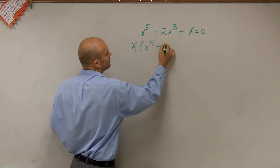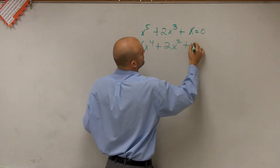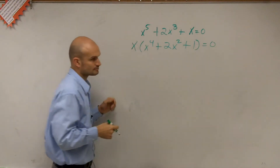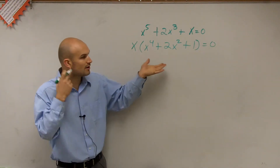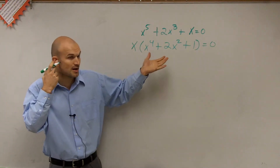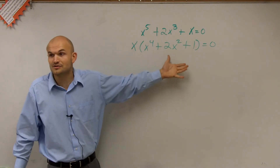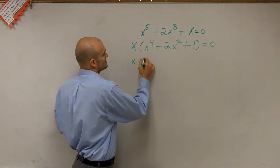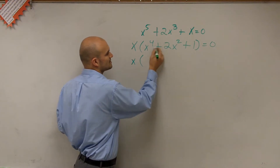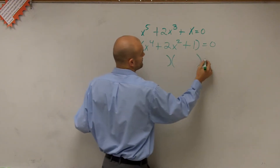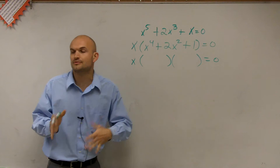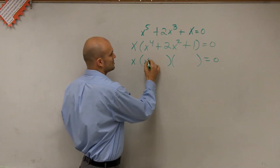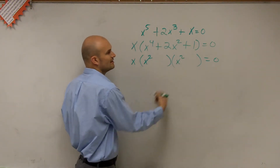I'm left with x times the quantity x to the fourth plus 2x squared plus 1 equals 0. But before I can even apply the zero product property, I want to ask: can I factor this even further? So I can say x times — let's see if I can factor this as two binomials. The first two terms have to be x squared times x squared.